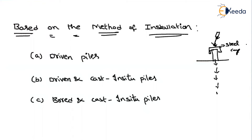In the driven and cast in-situ pile, a driving tube is used. The tube is hollow inside and is driven through dynamic action. After driving, the hole is filled with concrete or sand — that is what is called a driven and cast in-situ pile. The tube can be withdrawn or left in place depending on the project requirements.